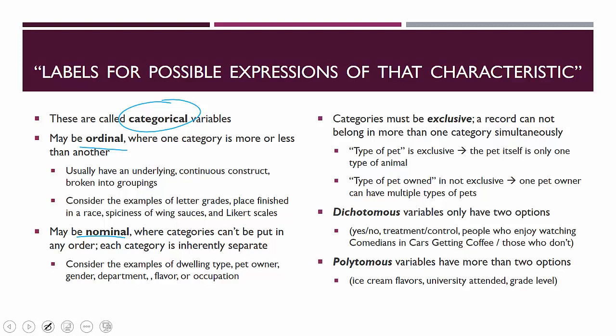There are some attributes of categorical data that we have to pay close attention to. Your categories must be exclusive — a record cannot be in more than one category simultaneously. A good example is recording the type of pet: is it a dog, is it a cat, is it a hamster? The type of pet is exclusive because the pet itself can only be one kind of animal. You can't be both a hamster and a dog.